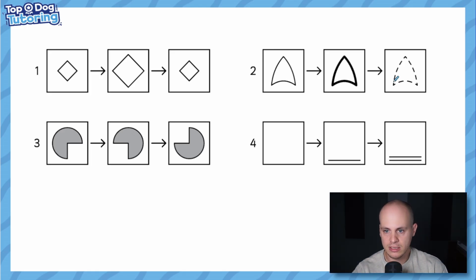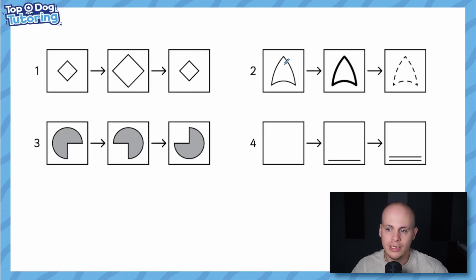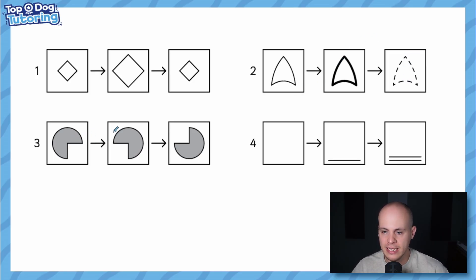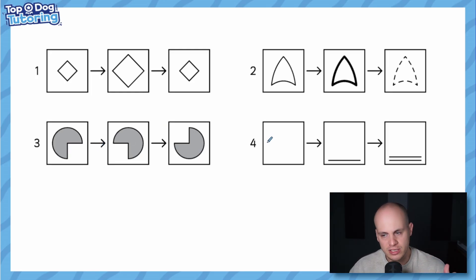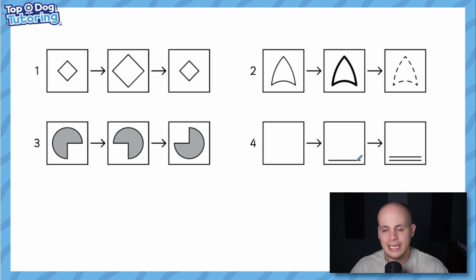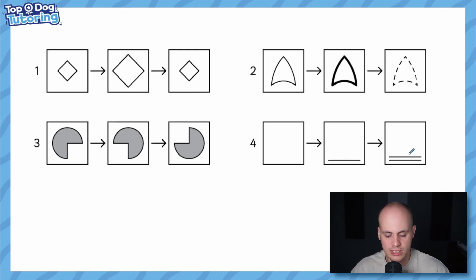Operation one makes the shape bigger, and applied again returns to original size. Operation two changes the border: once makes it bold, again makes it dashed. Operation three rotates the shape 90 degrees clockwise each time. Operation four adds a horizontal line to the bottom of the figure, and applied again adds another horizontal line — so it's cumulative, adding to the sequence.